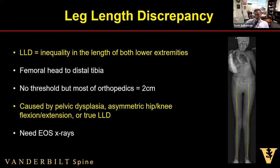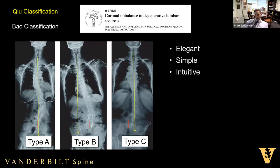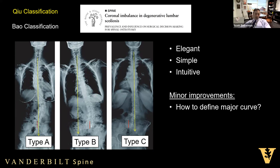Leg length discrepancy — inequality in the length of both lower extremities — most of the orthopedic world uses a threshold of two centimeters, though some use one centimeter. It can be caused by hip problems, pelvic dysplasia, asymmetric hip or knee flexion, or true leg length discrepancy; EOS imaging is needed to measure accurately. Probably the best classification for coronal malalignment is the Chew classification — also called the Bath classification — which is elegant, simple, and intuitive. Type A: CVA less than three centimeters. Type B: CVA greater than three centimeters, head toward the concavity. Type C: CVA greater than three centimeters, head toward the convexity.